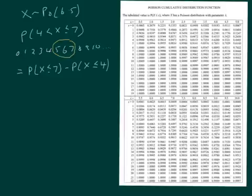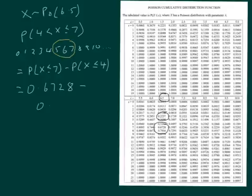So what we need to do now is to find these values on the table. We've got the parameter is 6.5. There it is. And we're finding x is smaller than or equal to 7, so that's 0.6728. And then we take away smaller than or equal to 4, which is 0.2237. There that is. And that works out to be 0.4491.